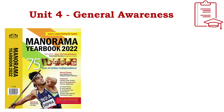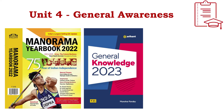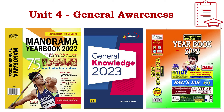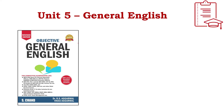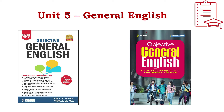For Unit 4, you can refer to the Manorama Yearbook or Arihant's General Knowledge book. You can also refer to the yearbook from Competition Success Review. For Unit 5 (General English), you can refer to Objective General English from S. Chand publication, written by Dr. R.S. Agarwal and Vikas Agarwal, or the Arihant Objective General English authored by S.P. Bakshi.